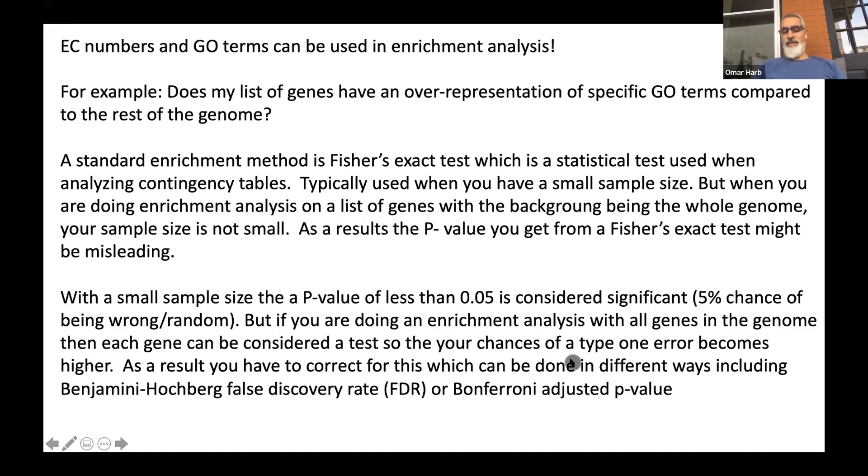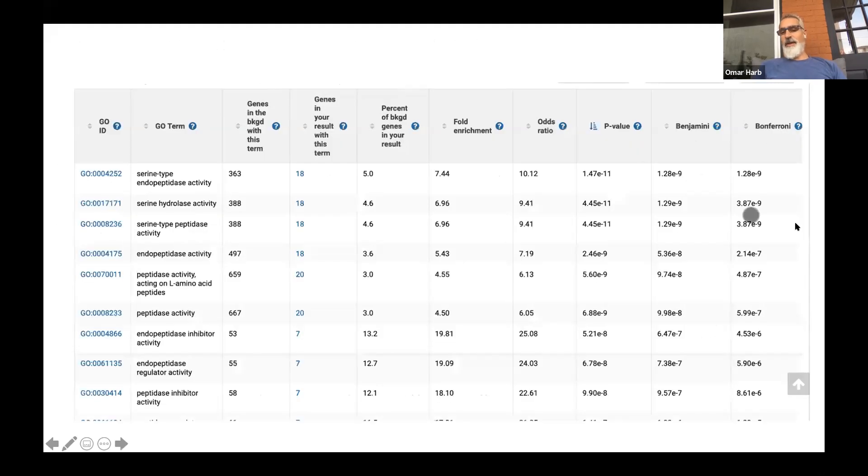So there are different ways of correcting these p-values. In fact, our analyses that we do in the website provide you all of this. This is an example of an output, and you'll be doing this on your own today. You'll get an output like this of a GO enrichment analysis, and you'll get a number of numbers including these p-values. You'll notice you have both these Benjamini and Bonferroni corrections. Both of these typically will be lower than your Fisher's exact test p-value. It's always important to look at these corrected p-values. If it's really significant, both of them are quite significant, but there are cases where a p-value looks significant but your correction actually does not look significant. That's something you have to take into account when you do these analyses.